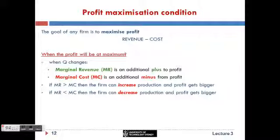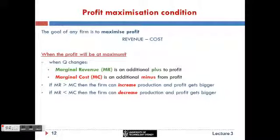If at the quantity the firm produces, marginal revenue is currently bigger than marginal cost, then the firm can easily increase production. By increasing production a little bit, it will add marginal revenue to profit and subtract marginal cost from profit. But since marginal revenue is bigger than marginal cost, on net it will have additional profit — so profit gets bigger by increasing production.